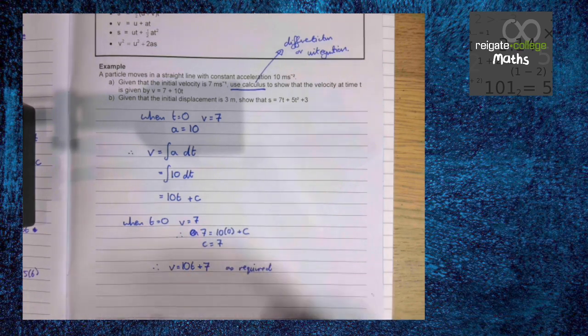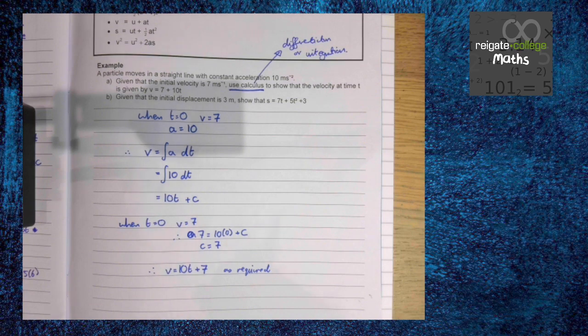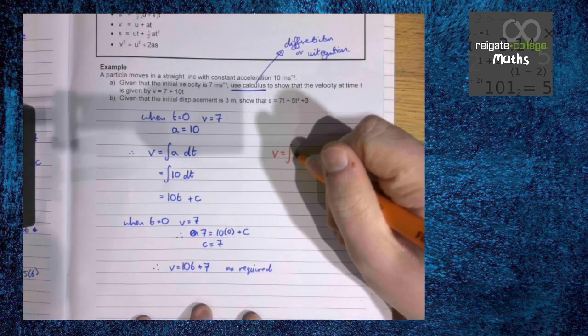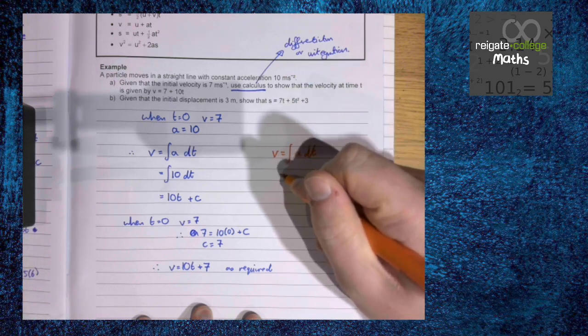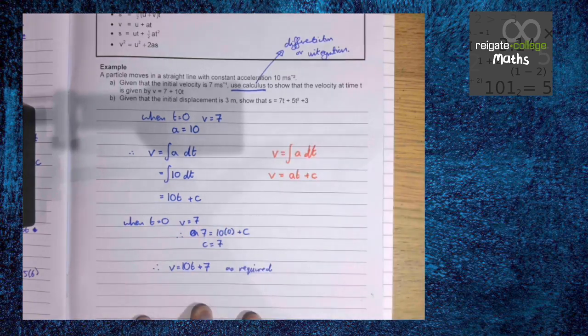Obviously we could have used one of the SUVAT equations, v equals u plus at, to get this and that's effectively what we've done. If you think about it, v is the integral of a. If we don't know what a is, v is at plus c.